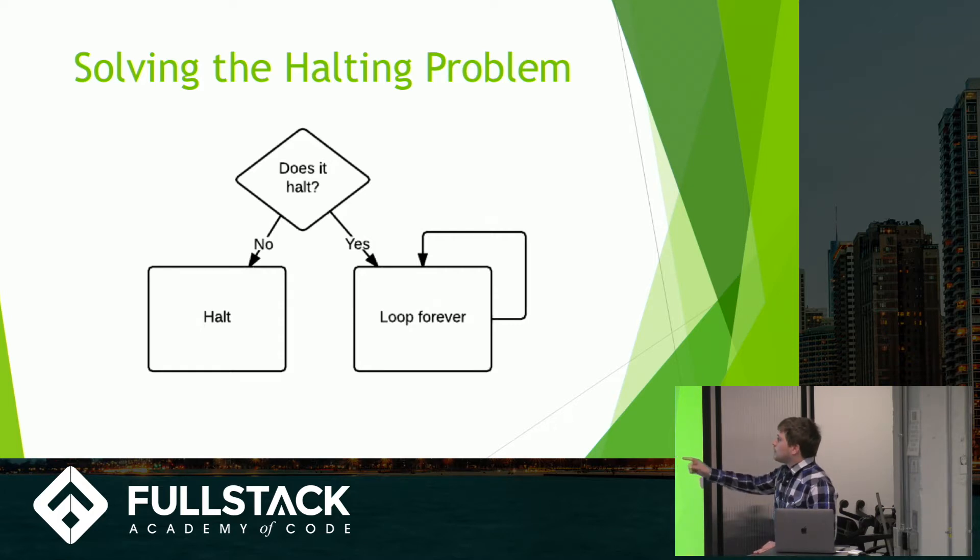But if you say no, I don't halt, then it halts and also contradicts itself. And through this contradiction, basically show that this machine cannot exist and there exists no machine that can accomplish what the halting problem machine was trying to accomplish.